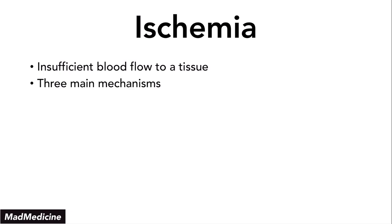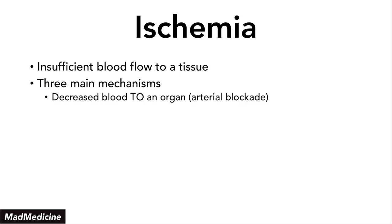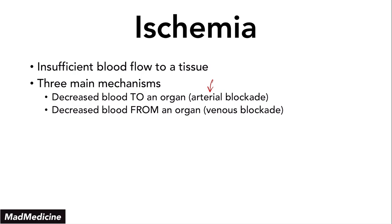There are three main mechanisms of ischemia. Number one: decreased blood going to an organ — a blockade of the arterial system. Number two: decreased blood coming from an organ — a venous blockade — which is important because if you decrease blood leaving an organ you won't have enough oxygenated blood delivered. The venous blockade causes everything to back up, whereas an arterial blockade means not enough blood reaches the organ at all. Number three is shock.